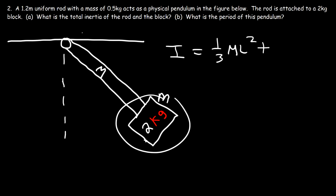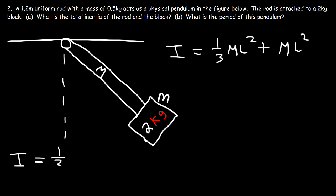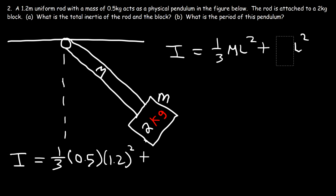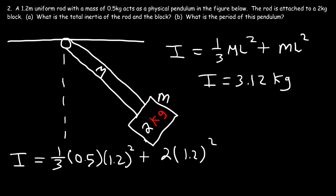The inertia of the block relative to the axis of rotation — we can treat that as a point mass, so it's m·r², which is essentially m·L². So plugging in the values: it's 1/3 times 0.5 kilograms times 1.2 meters squared, plus the mass of the block which is 2 kilograms times 1.2 meters squared. So 1.2² × 0.5 / 3 plus 2 × 1.2² gives us a total inertia of 3.12 kilogram·square meters.